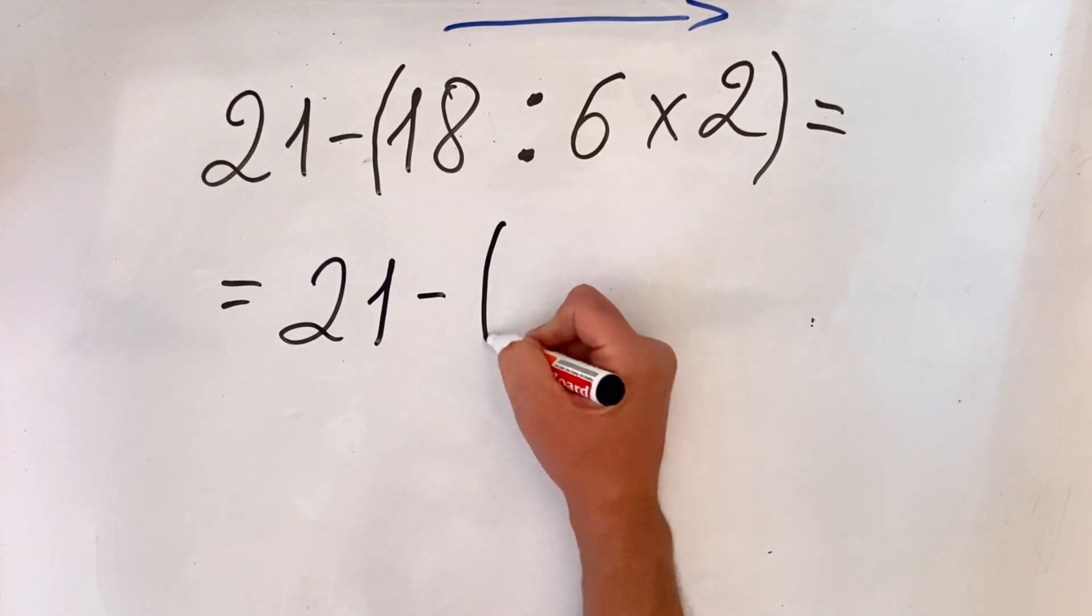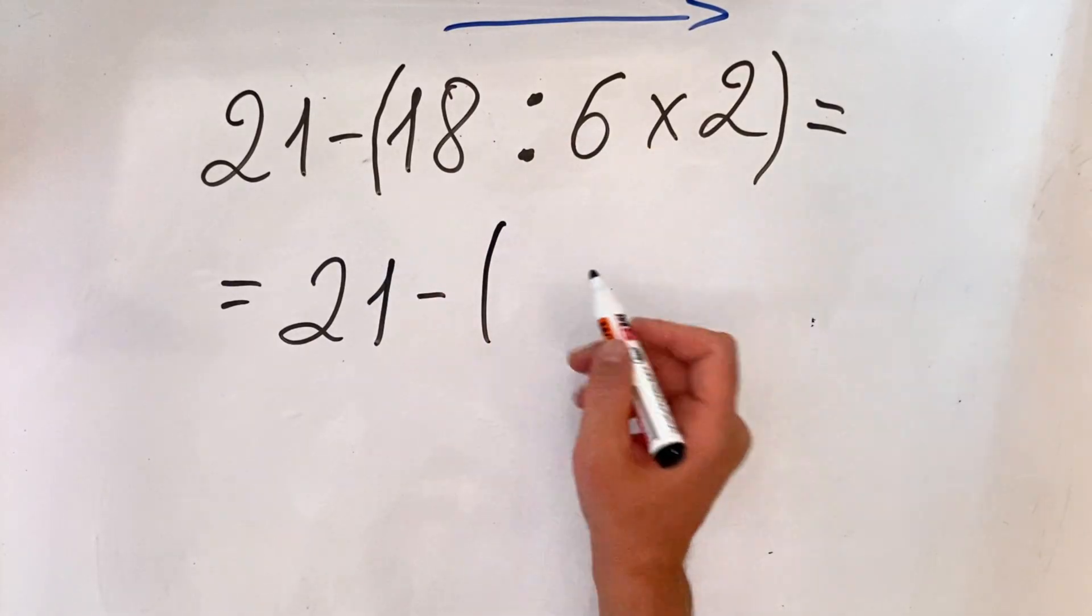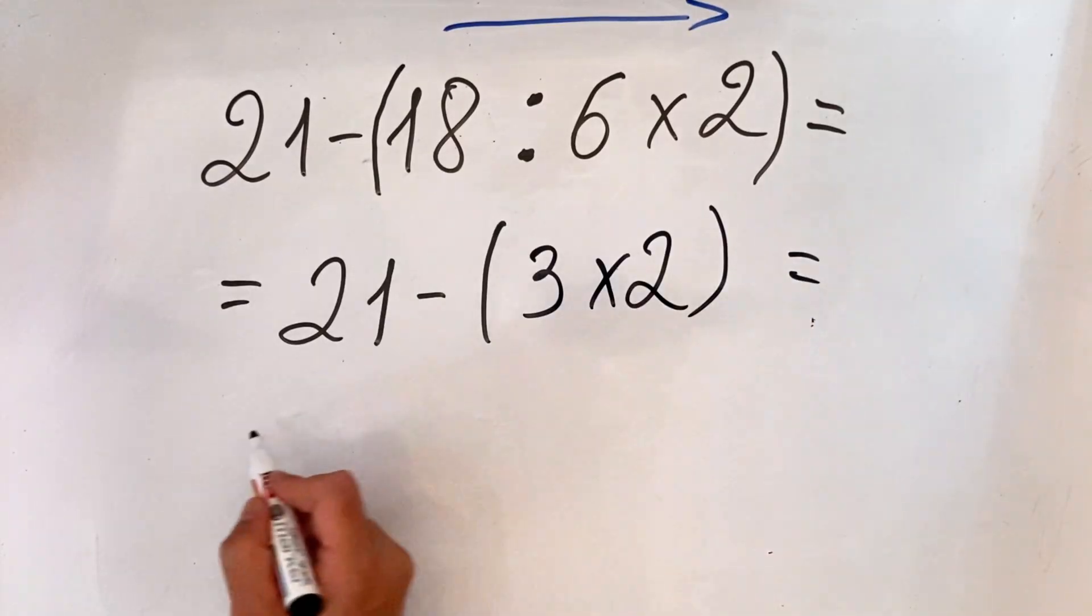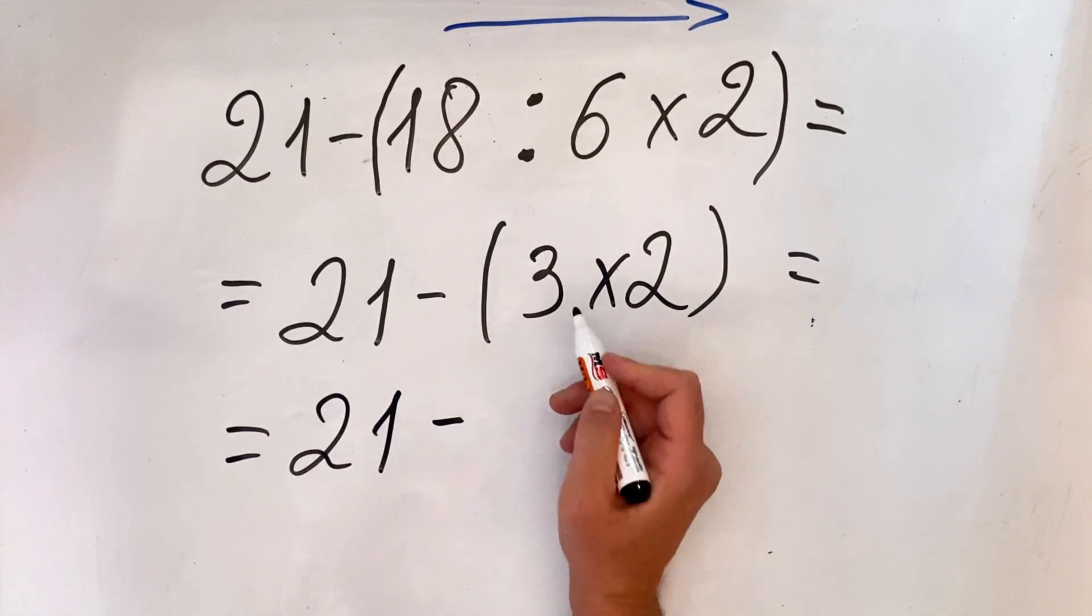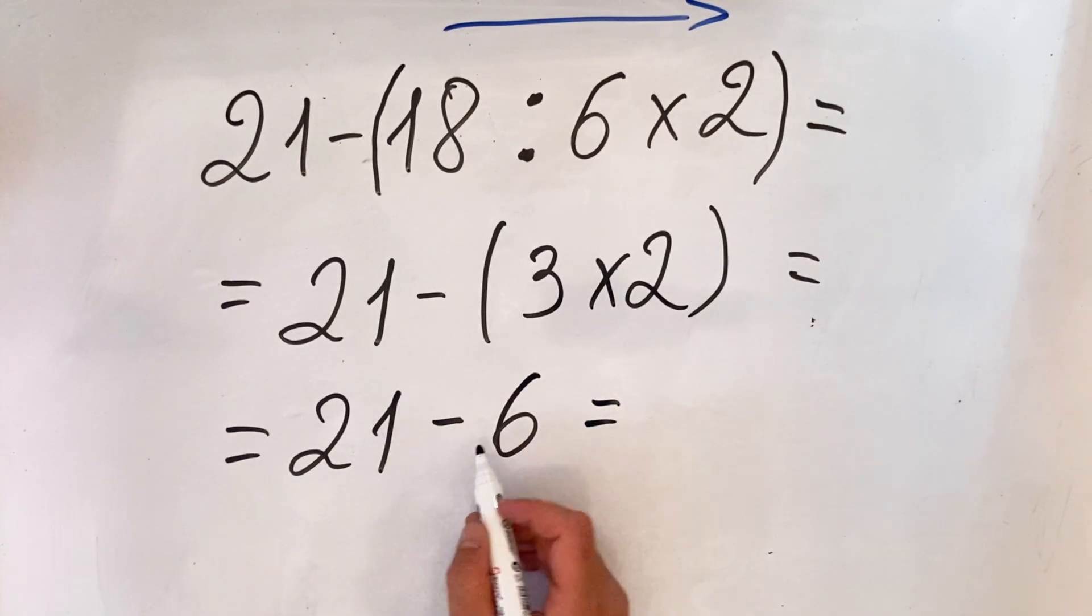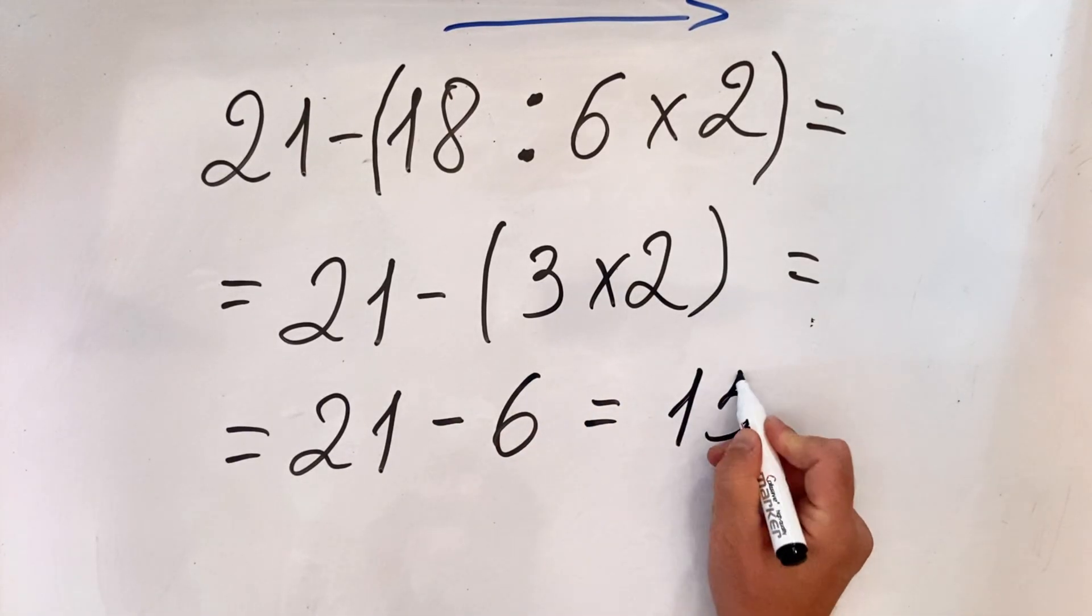So what we'll get is 21 minus 18 divided by 6, which is 3, multiplied by 2. So we have 21 minus 3 multiplied by 2, which is 6. And 21 minus 6 is 15.